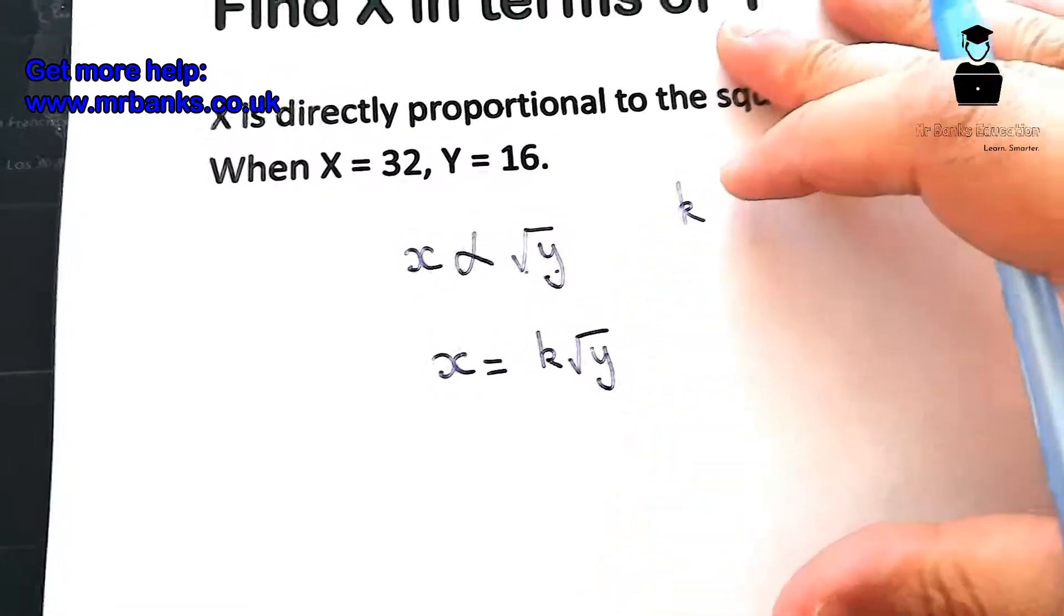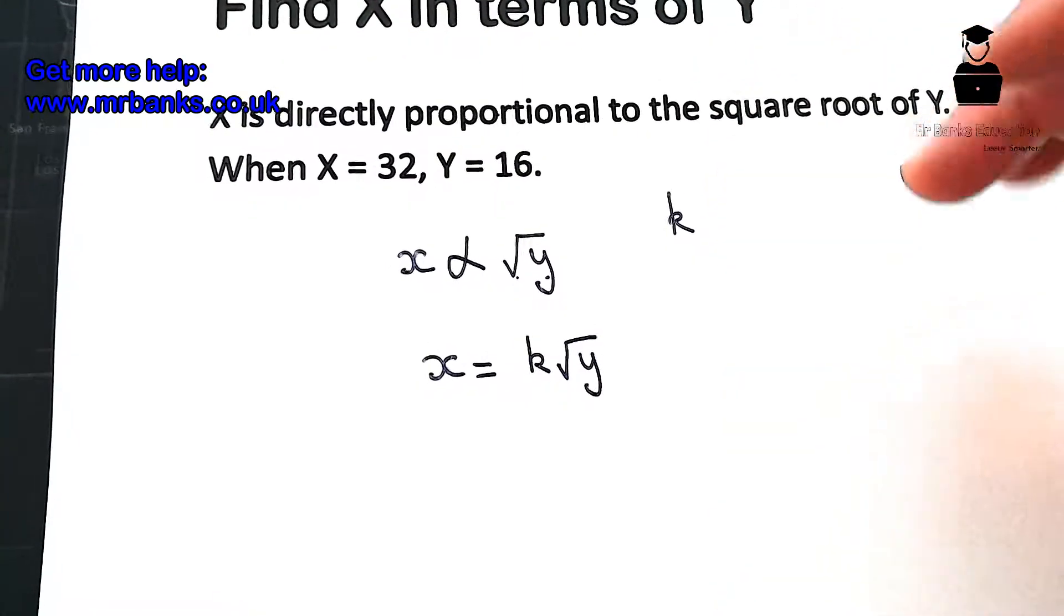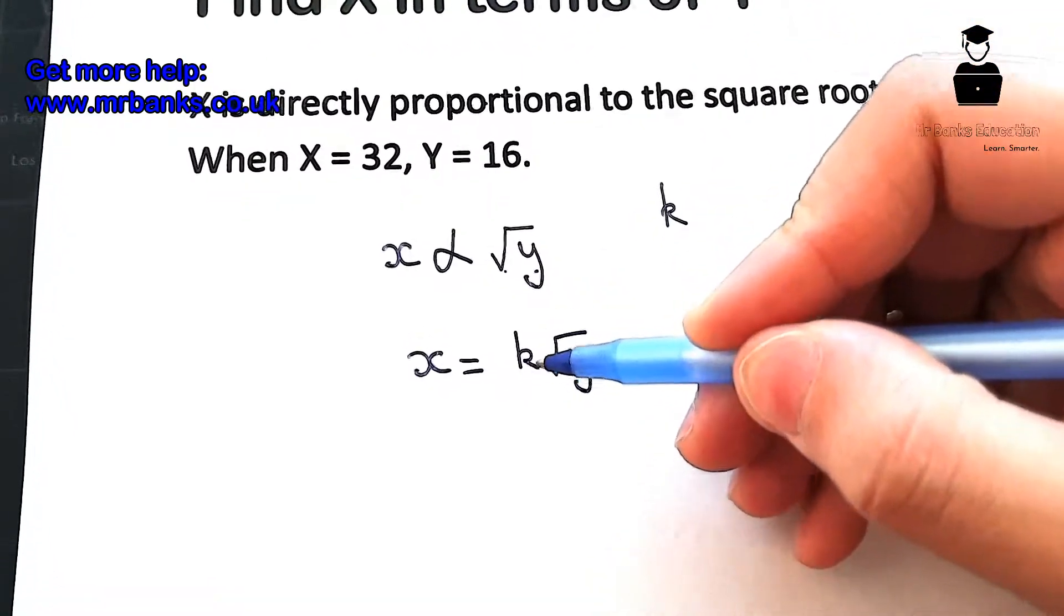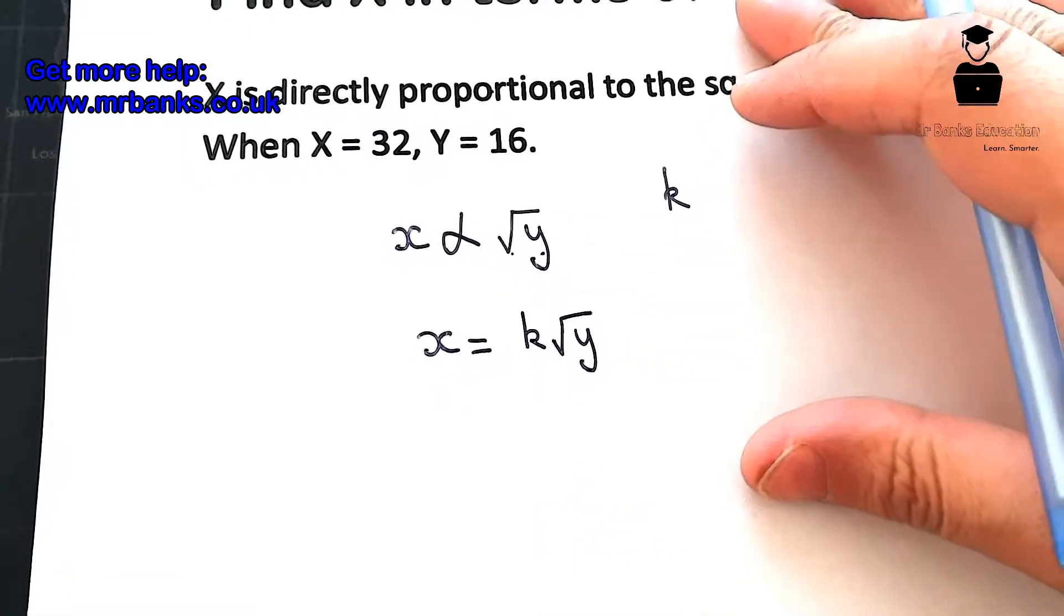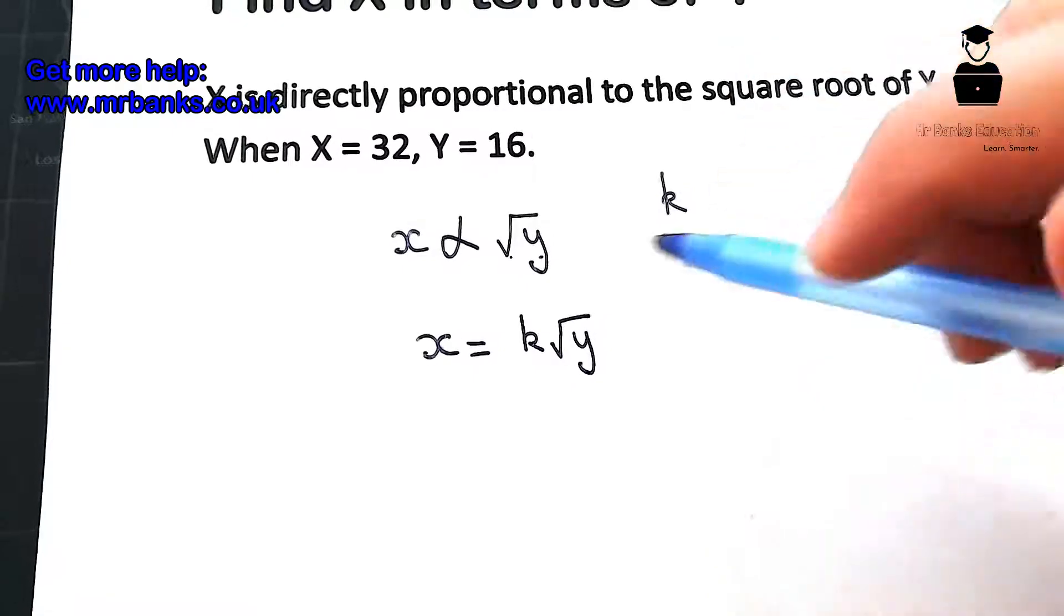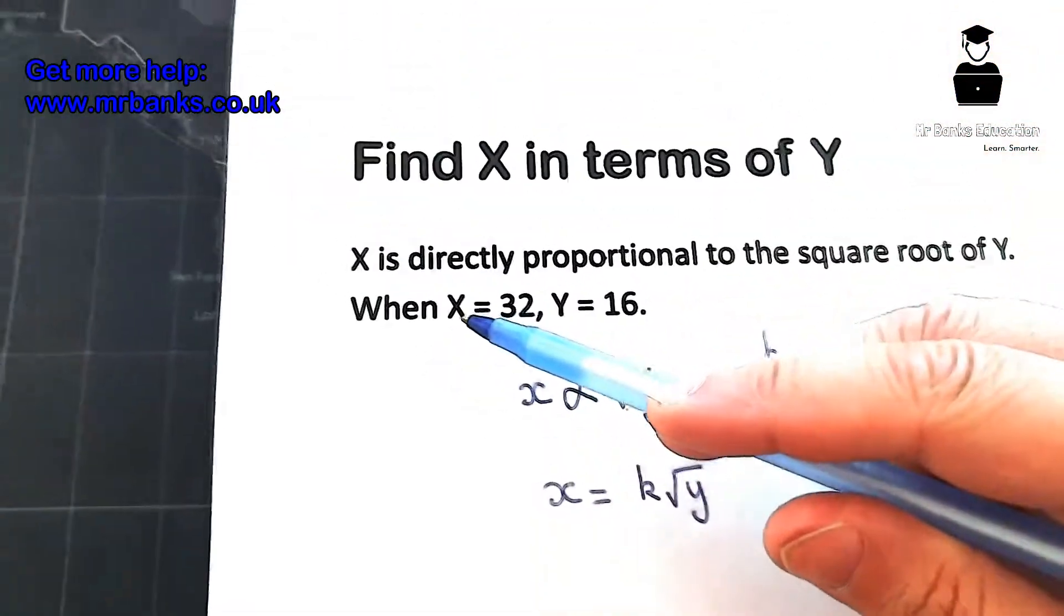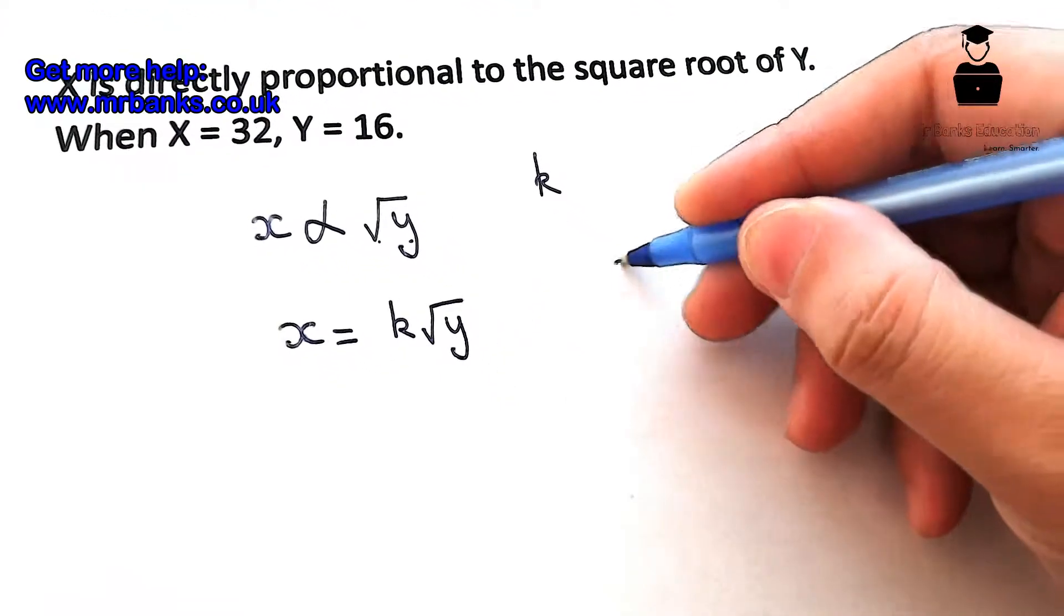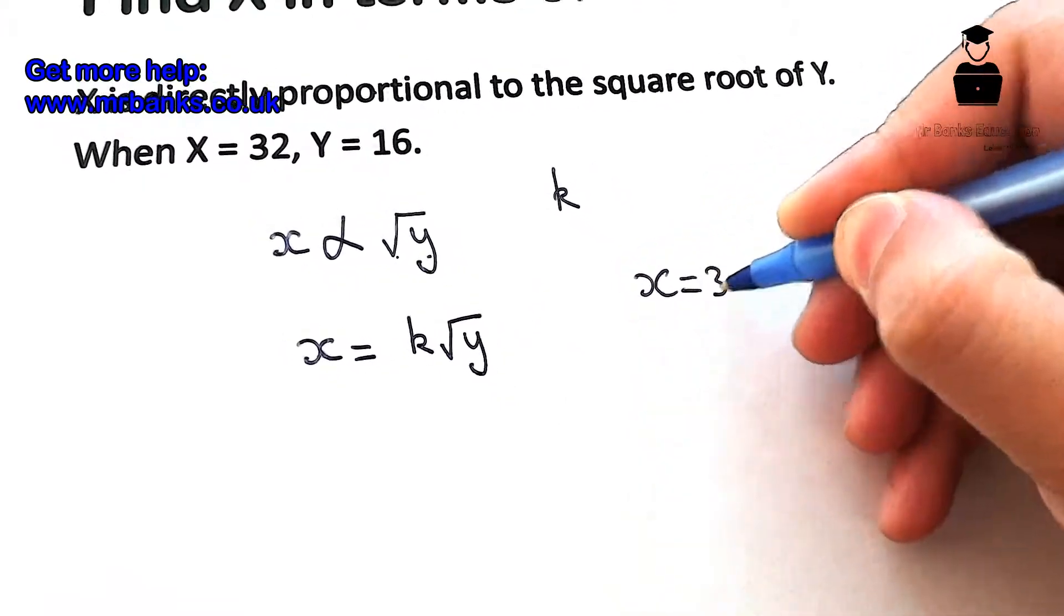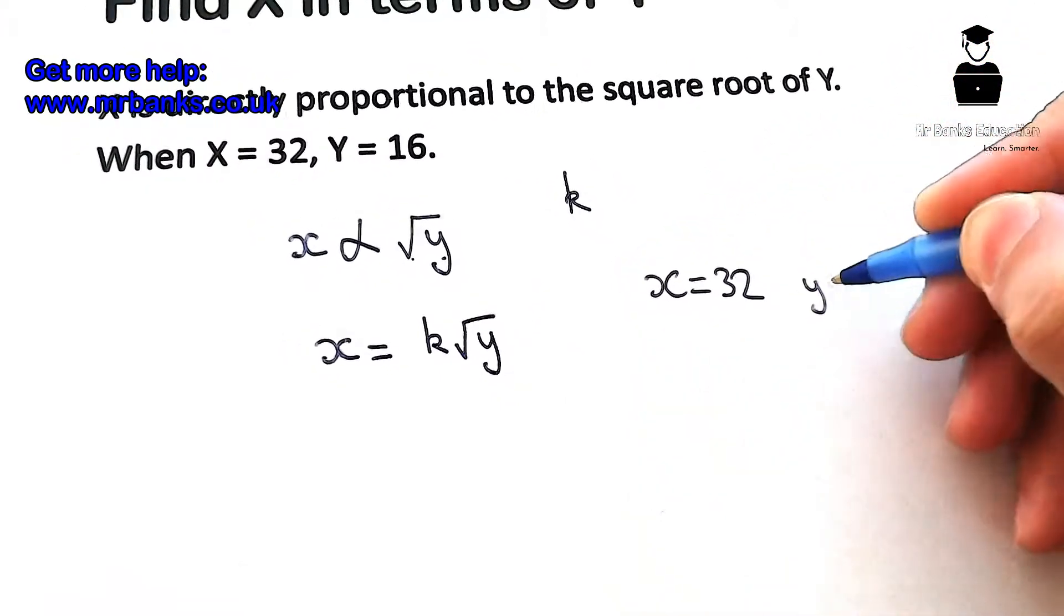The whole point of this question is to try and find out what that k is, because that is the proportion between root Y and X that we need to find. We've been told that when X is 32, Y is 16. So we write here X equals 32, Y equals 16.